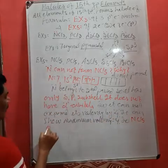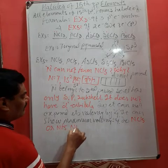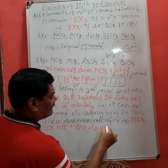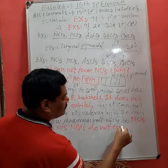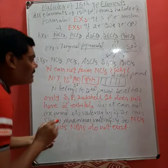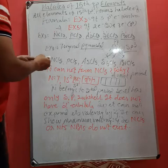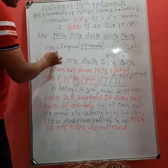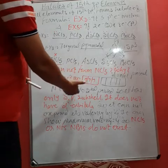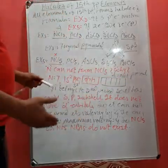NCl5 or you can write NF5 or you can write NBr5 do not exist. So student, this is one of the very important questions which is often asked in the CBSE exam, that why NCl5 does not exist? The answer is nitrogen belongs to second period, so it does not have d orbitals.